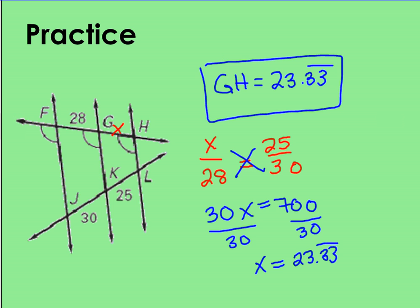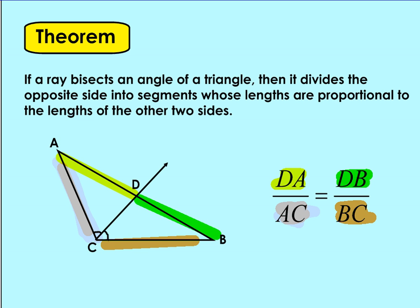One last proportionality theorem that we have has to do with if you have a triangle and some sort of ray that bisects an angle. So you're going to see a ray and you're also going to see these congruent marks saying that it's an angle bisector. If that's the case, then we'll have this ray dividing the triangle up proportionally. So we can say that DA over AC will be equal to DB over BC.